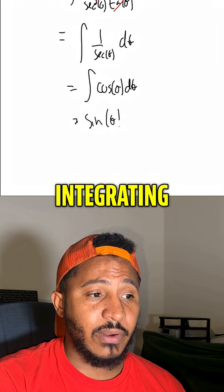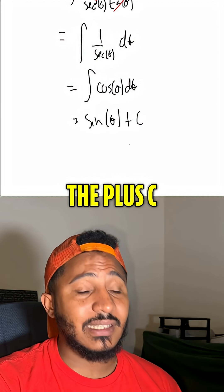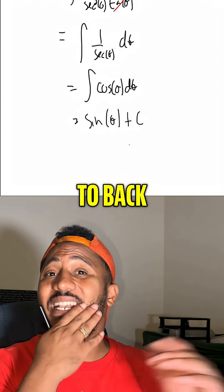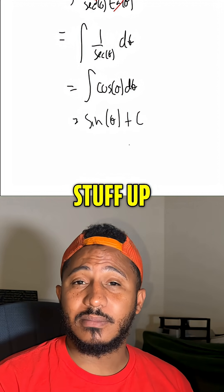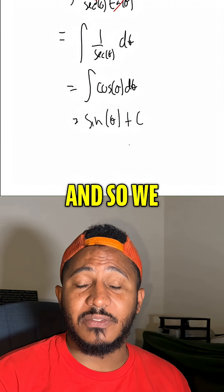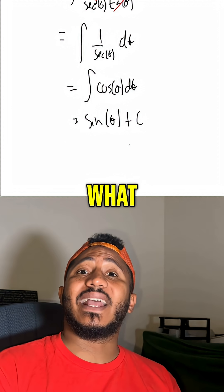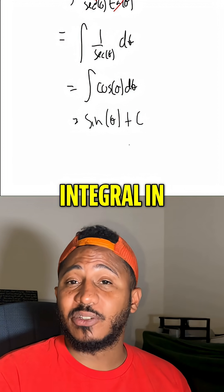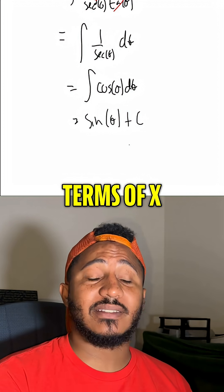We know the integral of cosine is just sine of theta. Once we're done integrating, don't forget the plus C. But now we have to back substitute — we made that theta stuff up, and so we need to find what this integral is in terms of x.